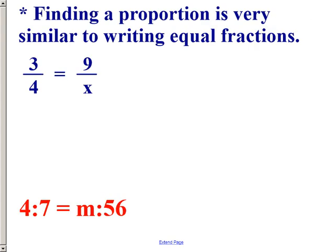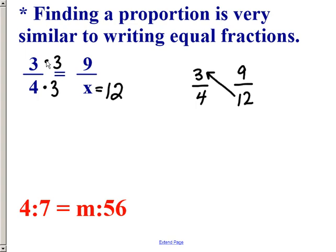Now, if I have a ratio and I want to find a missing number to make a proportion, it's really similar to writing equal fractions. For example, a ratio of 3 to 4 equals 9 to what? I can do 3 times 3 to get 9, so I must do 4 times 3, which means X has to be 12. Using cross products to check: 3 times 12 is 36, and 4 times 9 is also 36. My cross products are equal, proving the missing number is 12.